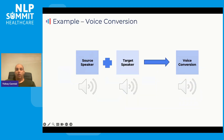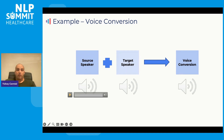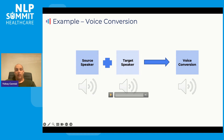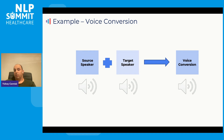Voice conversion is divided into a source speaker — the person we want to convert — and a target speaker, the person we want the source to sound like. For example, here is the source speaker: 'I've done nothing wrong. And that's the truth.' And the target speaker: 'He felt there was no case to answer.' The converted voice makes the source speaker sound like the target speaker: 'I've done nothing wrong. And that's the truth.' As you can see, the voice conversion system knew how to take the source speaker and make them sound like the target speaker.